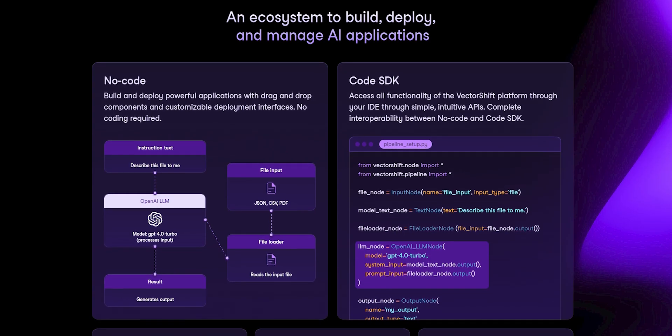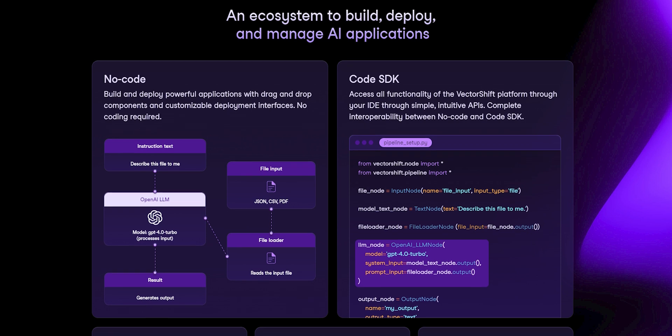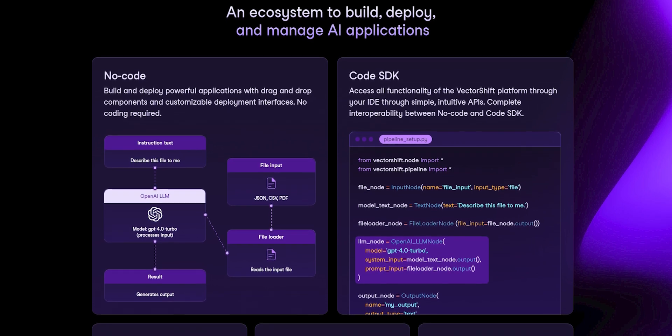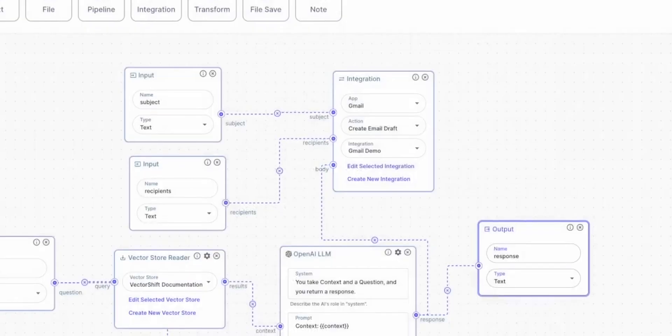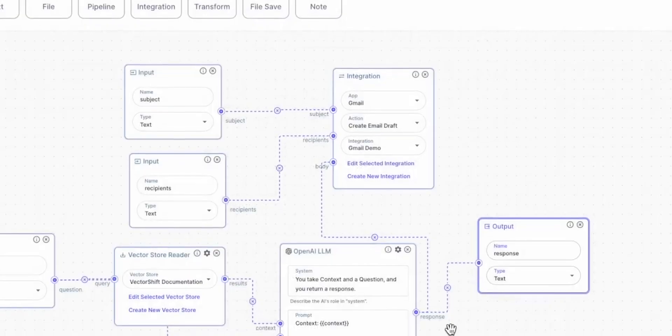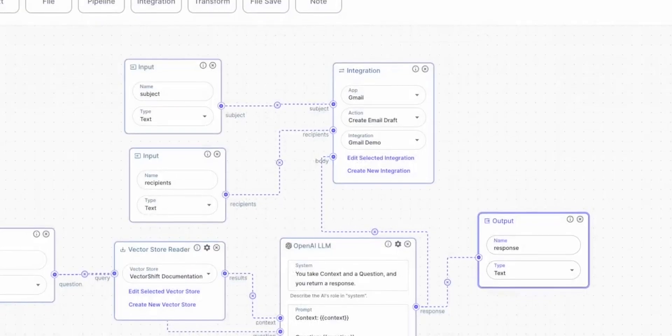For developers, VectorShift also has an interoperable Python SDK, and an evaluation suite to compare models, prompts, and AI architectures. I'm definitely going to hold on to VectorShift and try even more things with it. If you want to supercharge your business, I'll leave a link in the comments. Thank you VectorShift for sponsoring this video, and thank you guys for watching — see you soon.